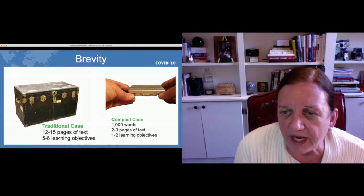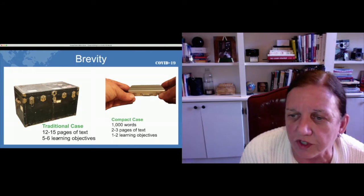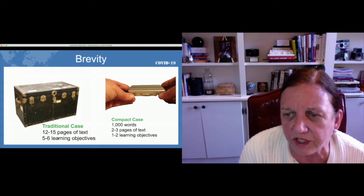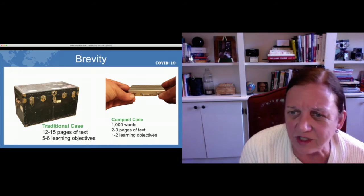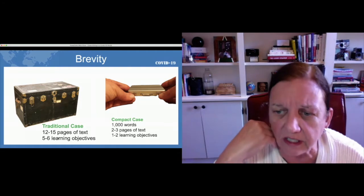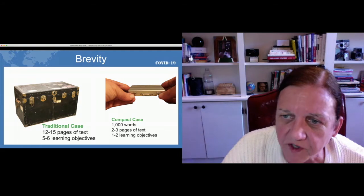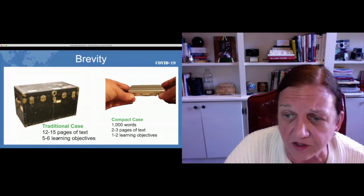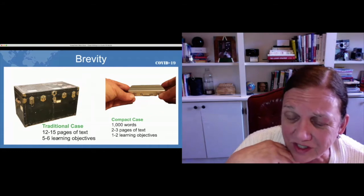At the Case Journal, we've pioneered compact cases. We write cases that are 1,000 words or less — about two to three pages of text — and they usually focus on one to two learning objectives. These shorter cases are really well-received by students. The case is designed to be read in about 15 minutes. The focus of the case is significantly narrower than a traditional case, but it's enough to get the conversation started. You can achieve the two learning objectives very well. I can do a whole strategy case in 1,000 words. At first I didn't believe it, but I did write one as a proof of concept, and it actually teaches quite well.